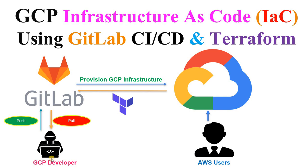Your developer would be using any kind of VS Code or any other IDE tool for coding. They do Git pull and Git push, which interacts with the version control tools. GitLab is a predominant CI/CD tool in the market, which helps you manage version control and also do the required CI/CD jobs. This is the basic flow of this demo.